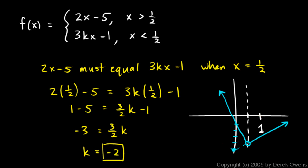And as we approach a value of 1 half from the left, along this section, we're approaching the same y value. And k has to be negative 2 in order for that to work.